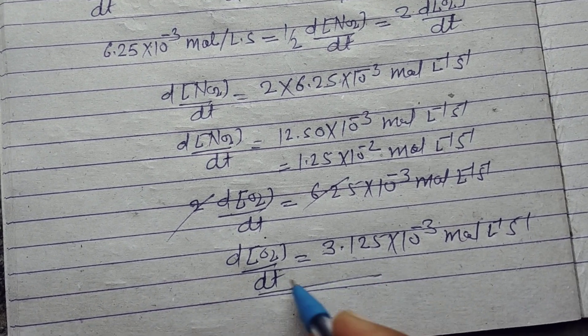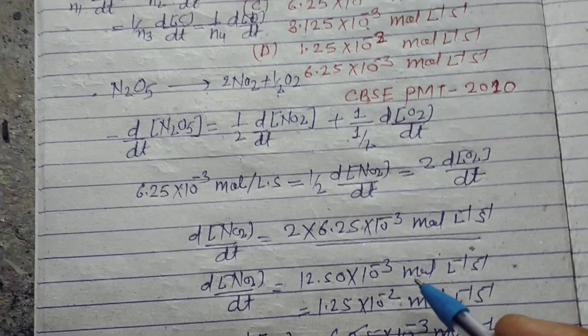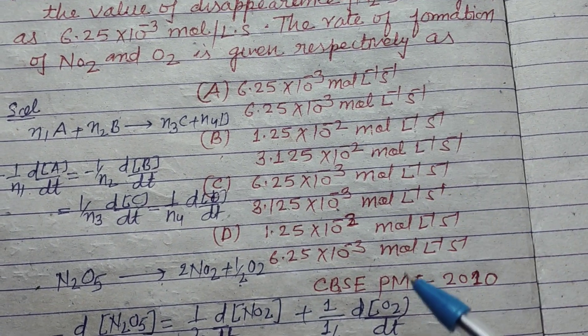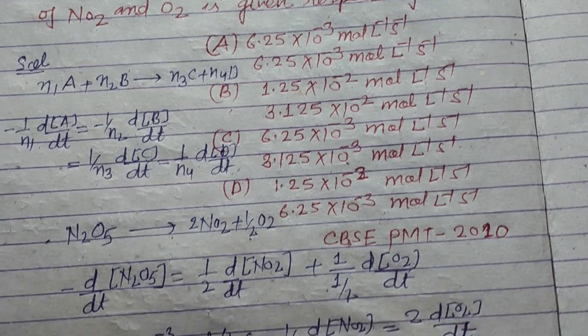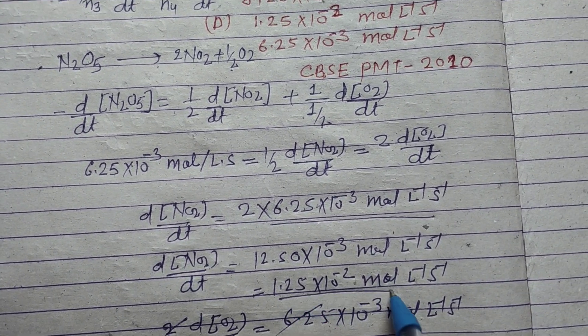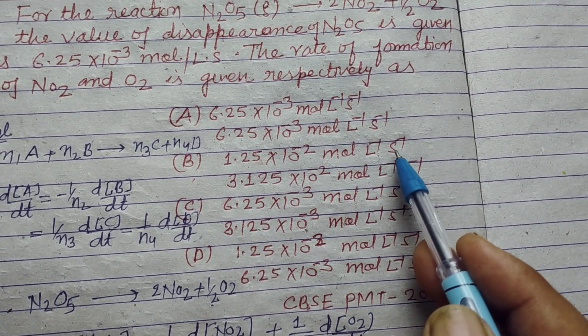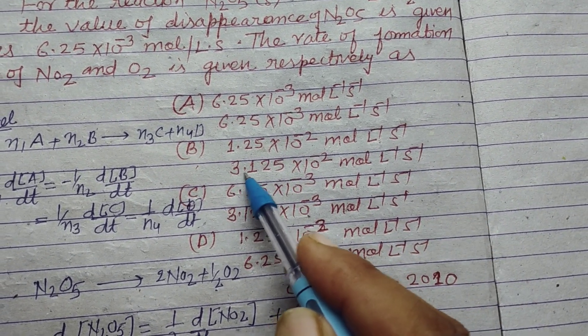So rate of formation of NO2 is 1.25×10^-2 mol per liter per second, and rate of formation of O2 is 3.125×10^-3 mol per liter per second.